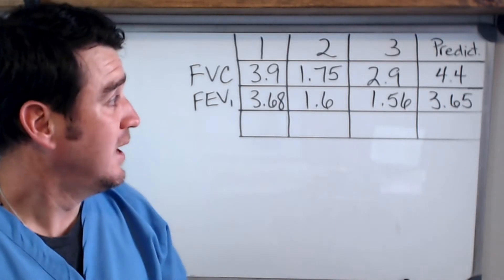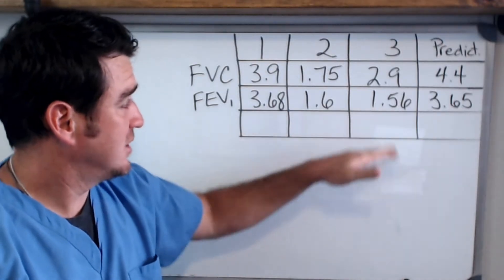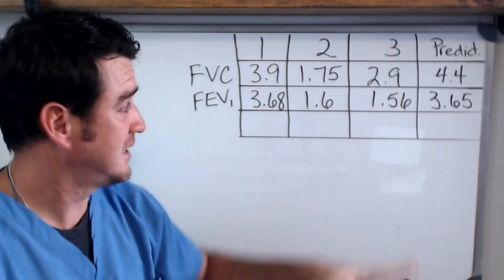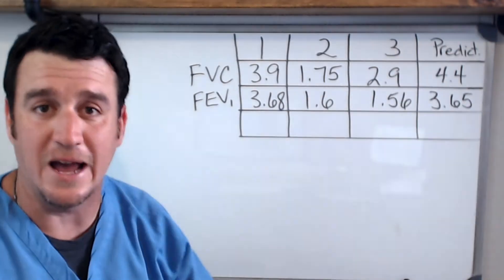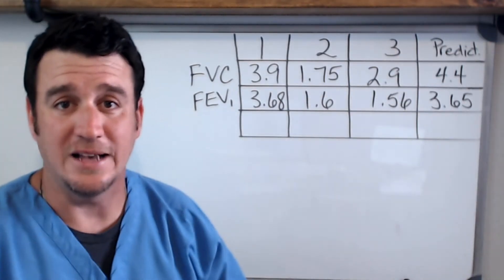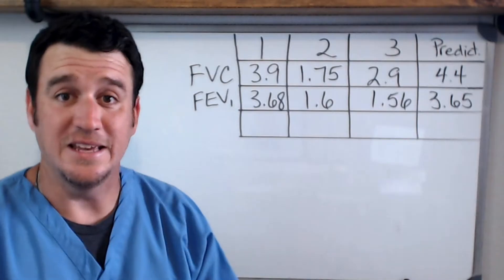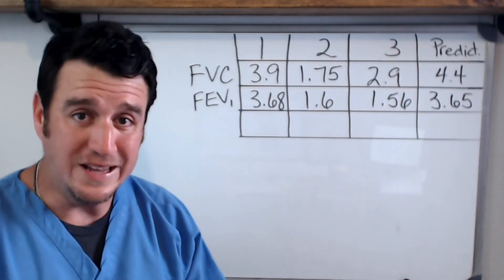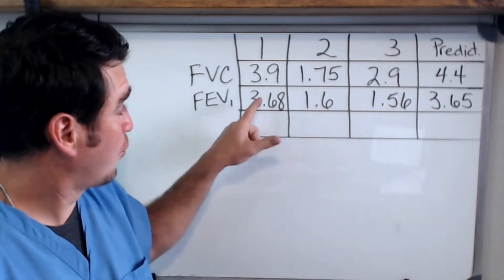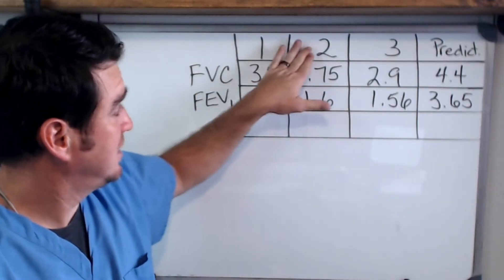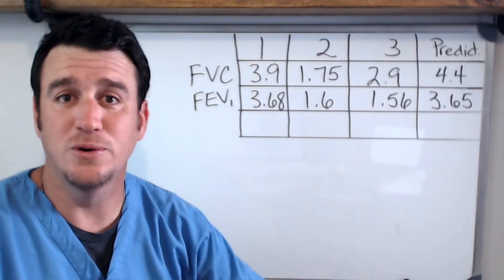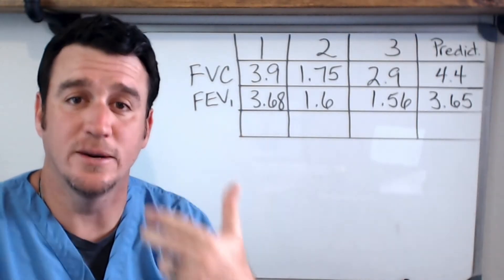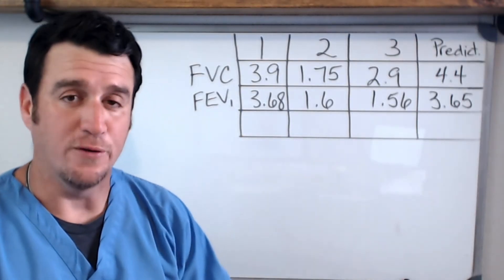What you see on the board here is three different patients — same age, same height, same sex. That's why they all have the same predicted values. I set it up that way to make it easier so I didn't have as many numbers on the board. So: three different patients — patient one, patient two, and patient three. We're going to identify which one is normal, which one is restrictive, and which one is obstructive.